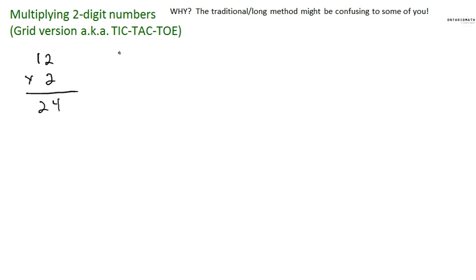The number twelve is actually a group of ten, plus another two. So ten plus two equals twelve. I just broke it down by place value here.